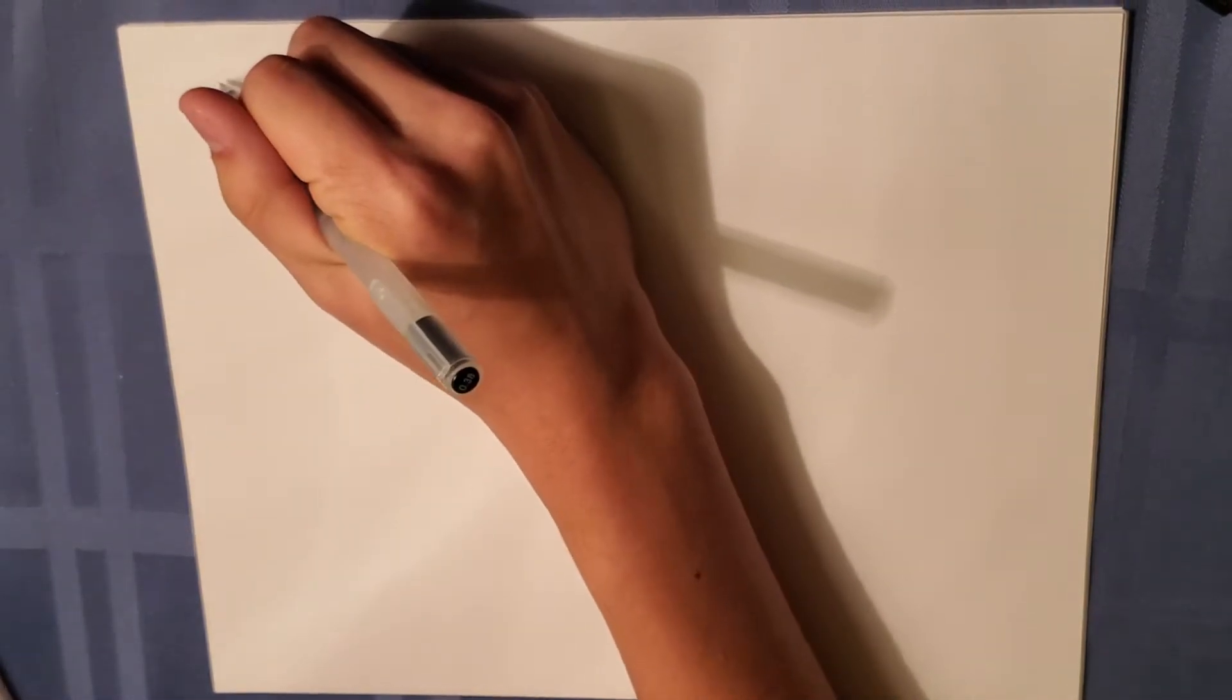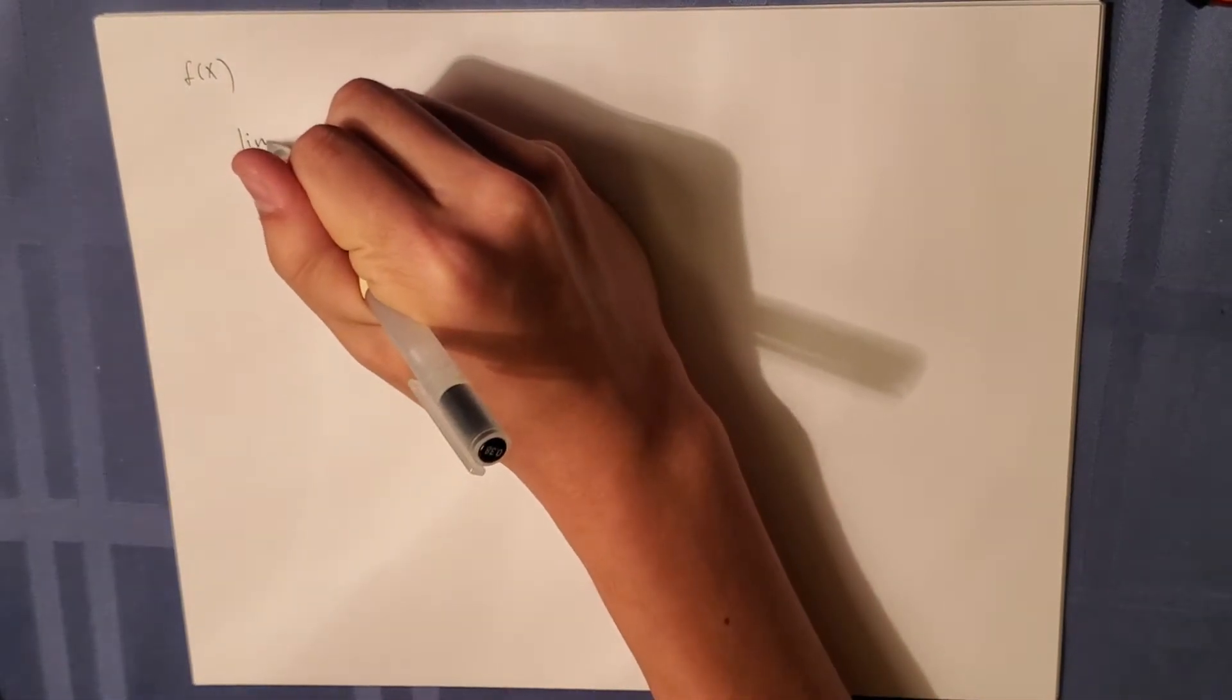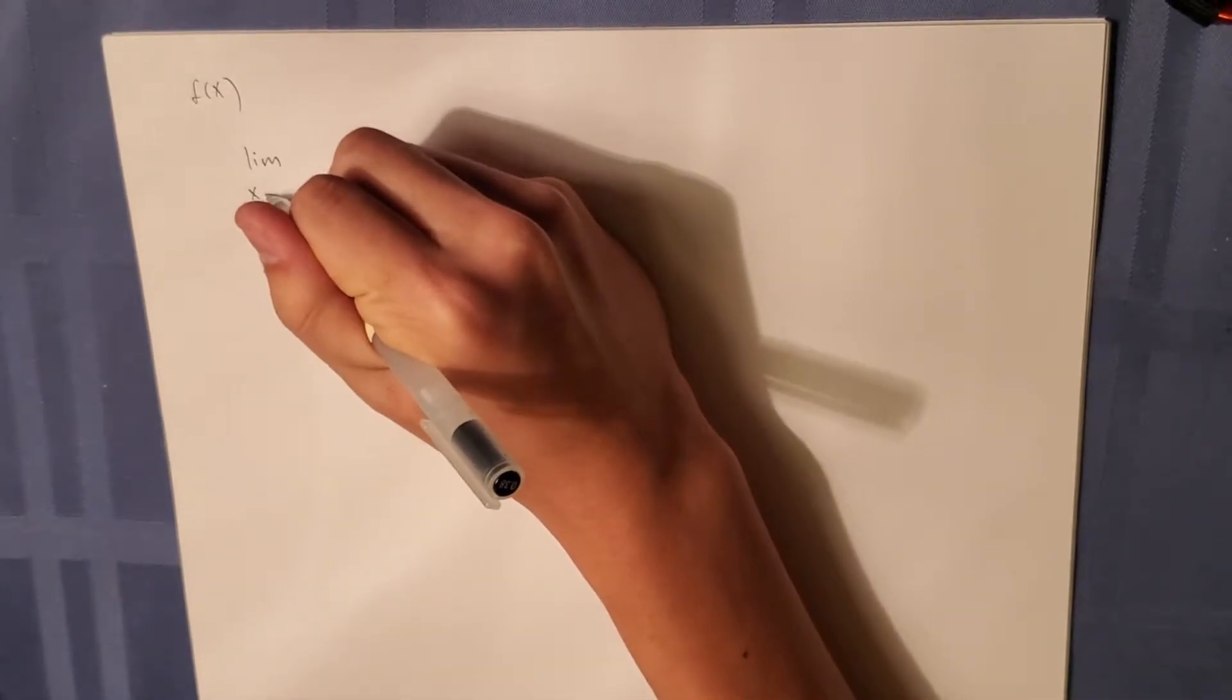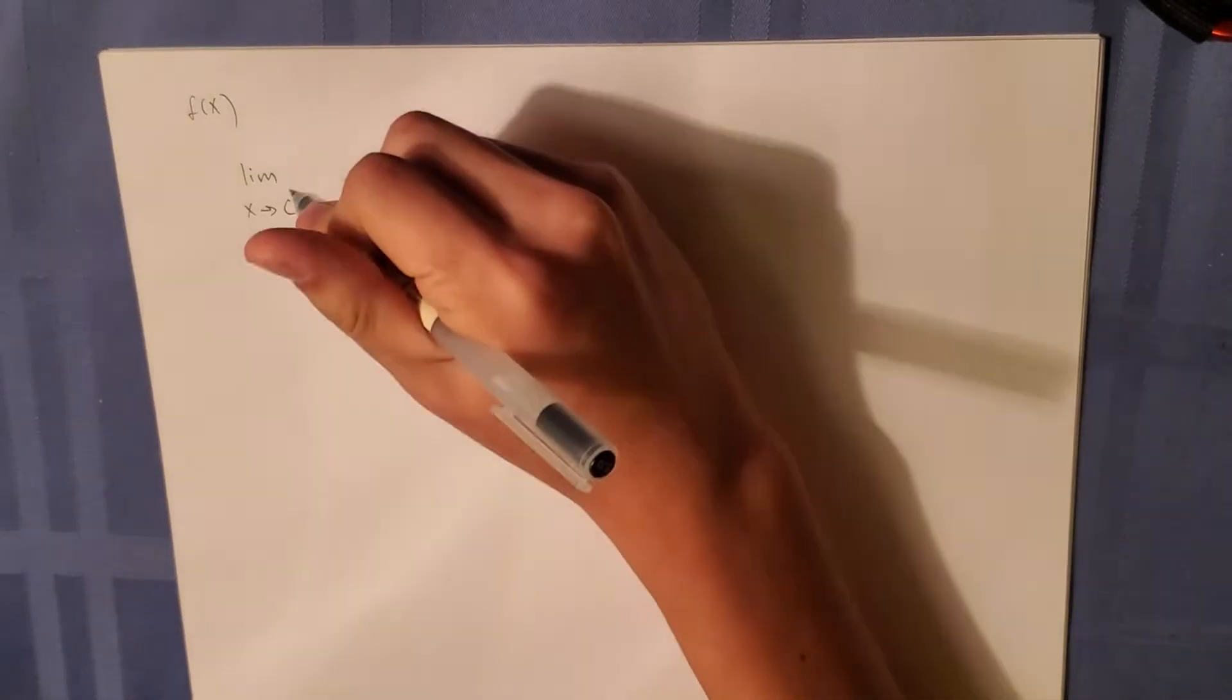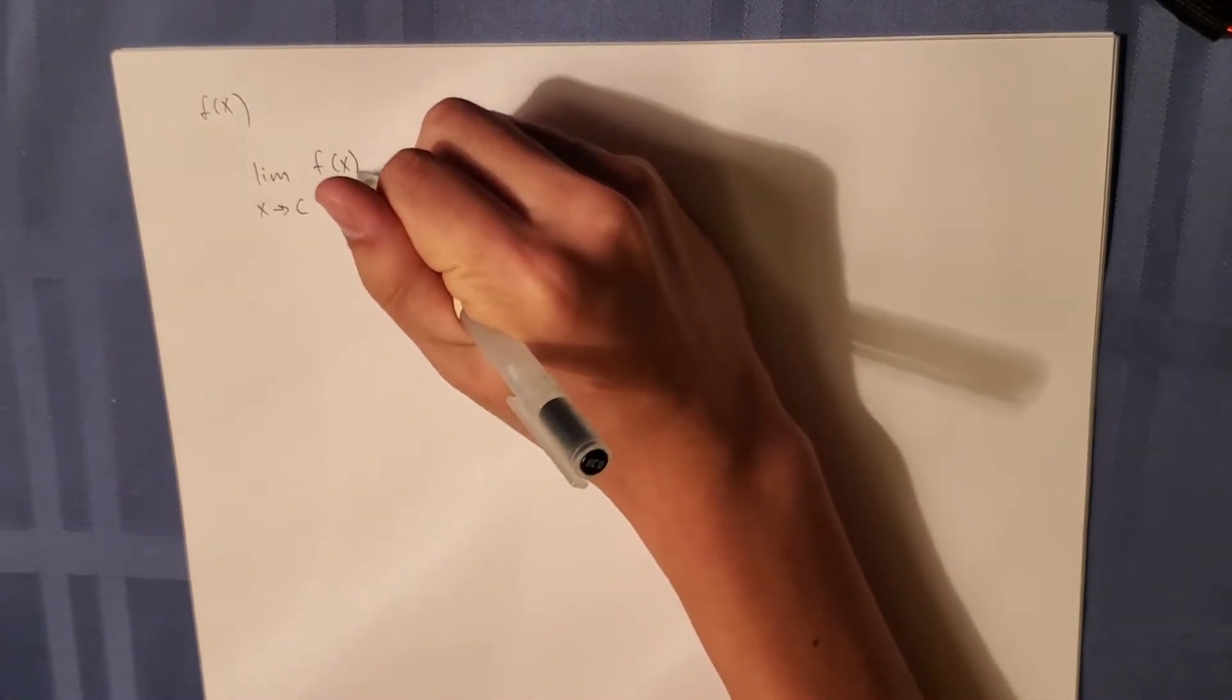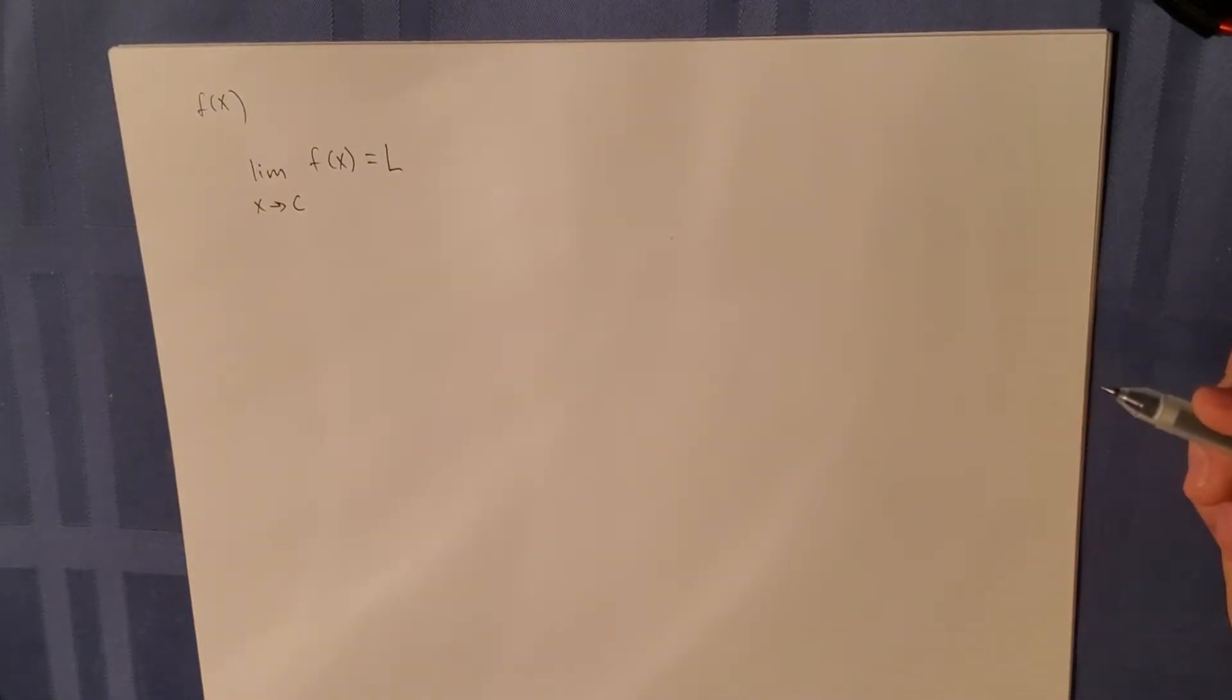So to start off, by definition, a limit would be when you have a function, say f of x, the limit as x approaches a certain value, we'll call it c, of f of x will equal this certain value L.